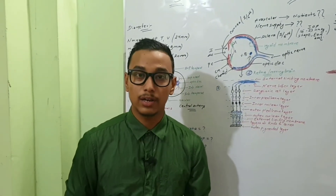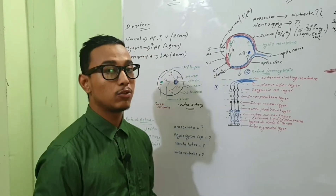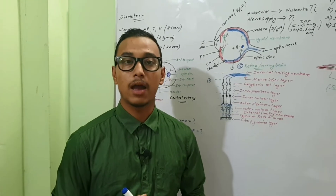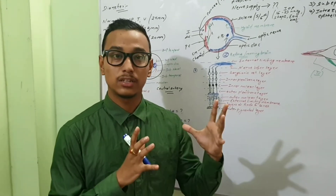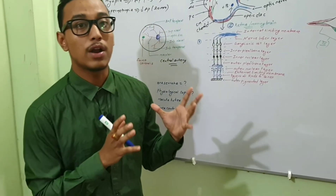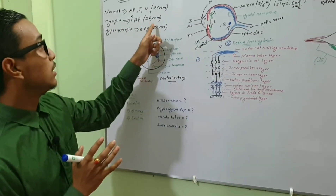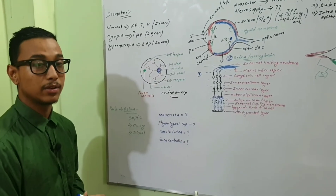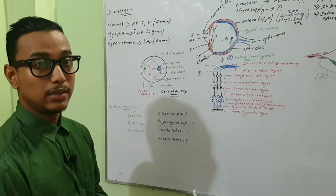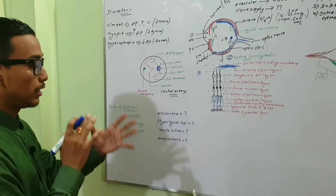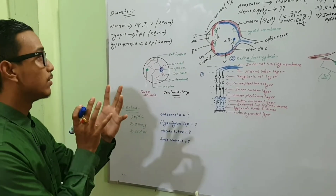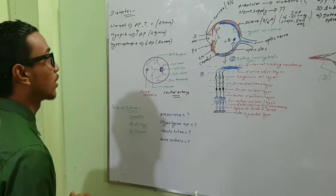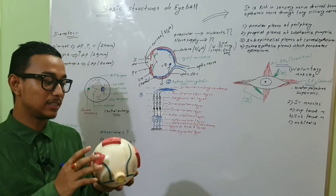Regarding the diameter of the eyeball: normally the anterior-posterior diameter, transverse diameter, and vertical diameter are all equal at 24 millimeters. In myopia (short-sightedness) there is elongation of the eyeball and the anterior-posterior diameter may increase up to 29 millimeters. In hypermetropia (far-sightedness) there is a decrease in size and the anterior-posterior diameter may decrease to 20 millimeters.